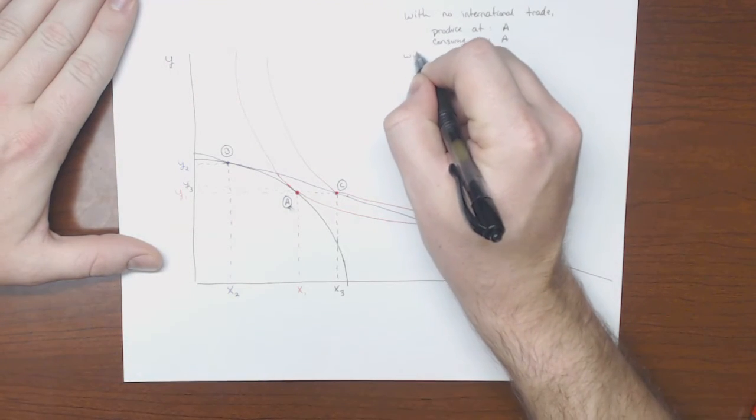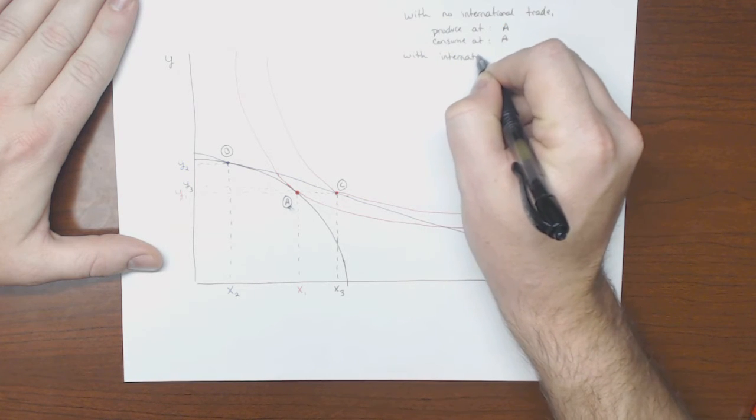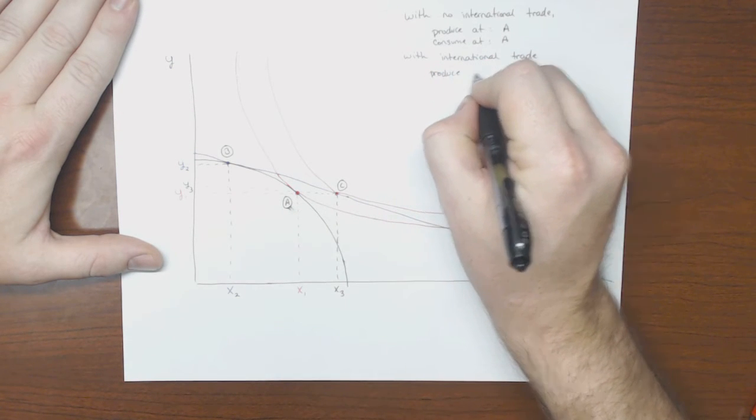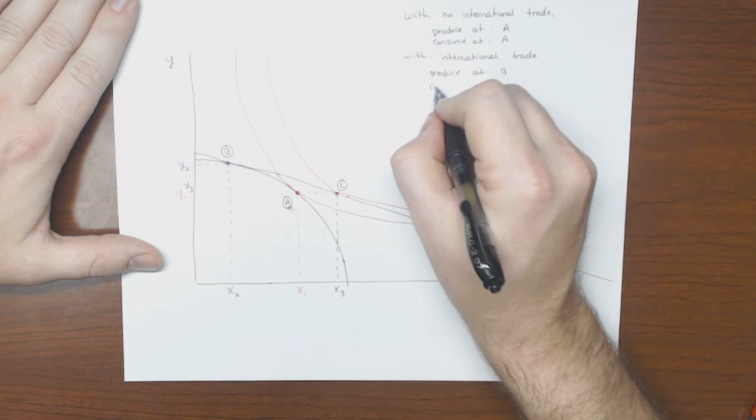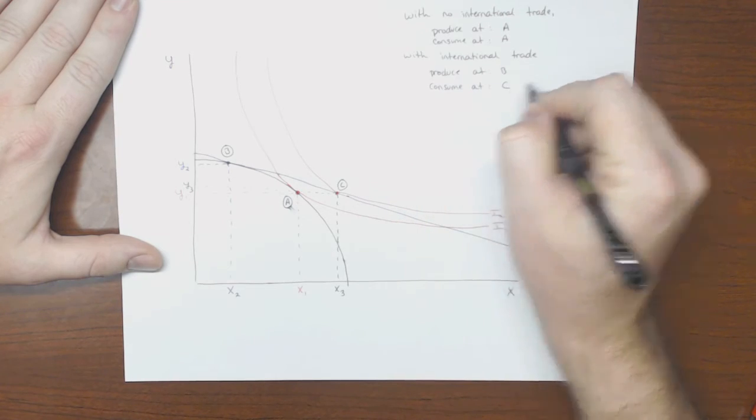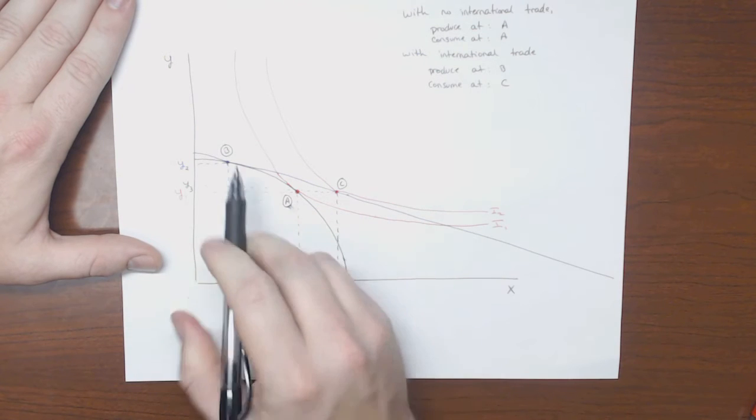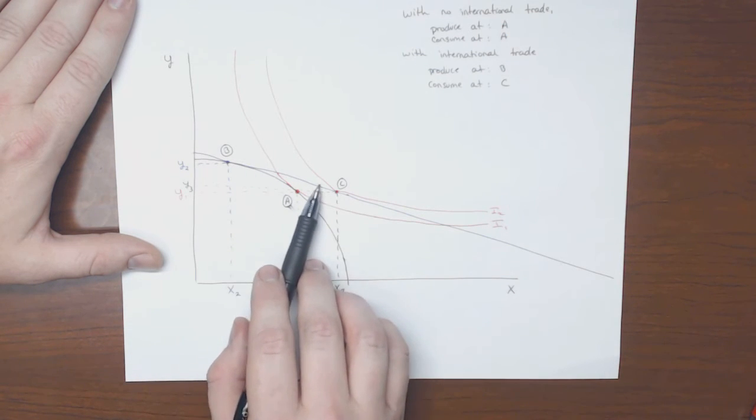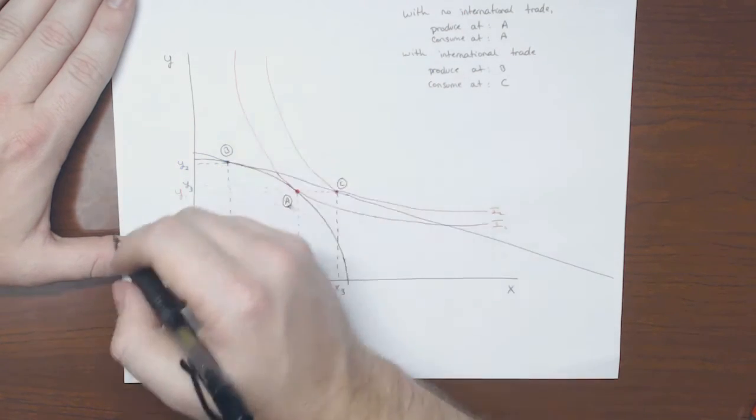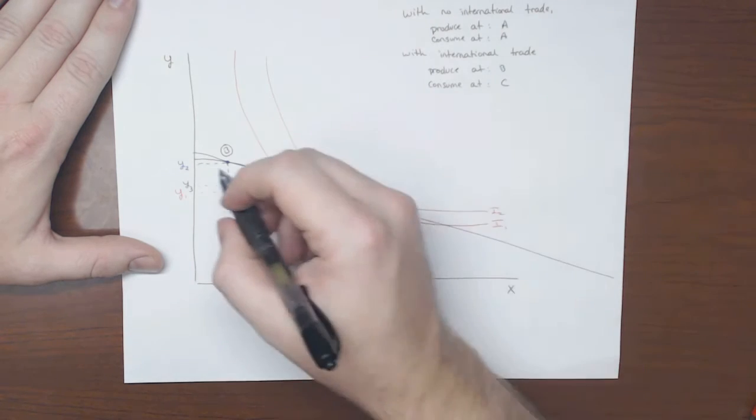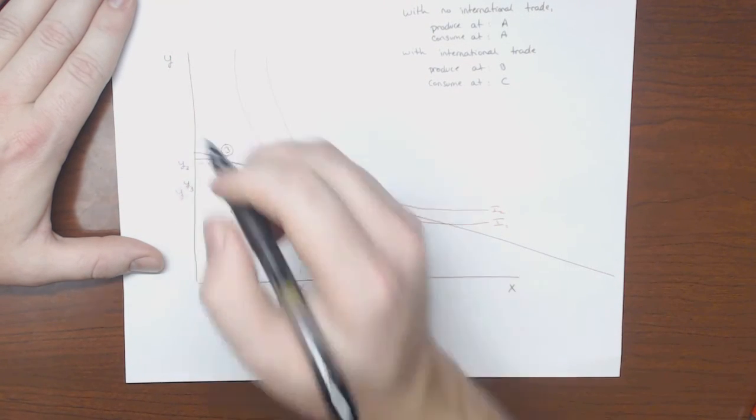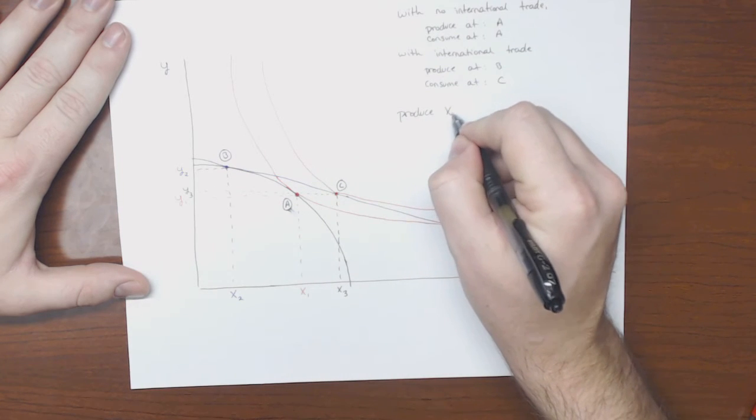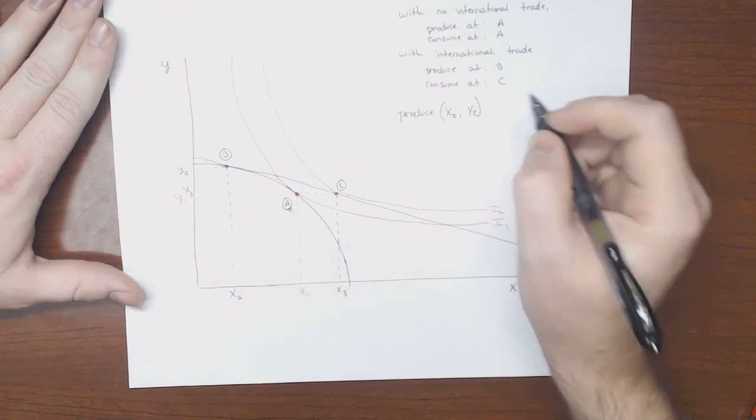But when we can trade, with international trade, we will produce at point B and consume at C. So we will produce here, which lets us maximize our value, and then we can trade along this ISO value curve and get to point C. So, or to put it in sort of everyday terms, we'll produce this much Y. We will produce X2, Y2 ourselves.